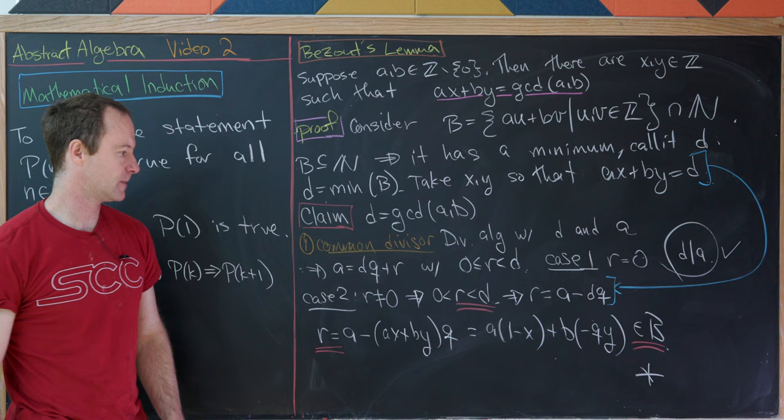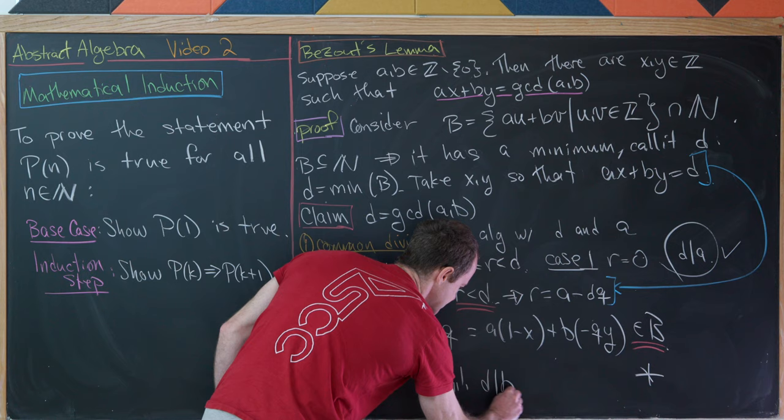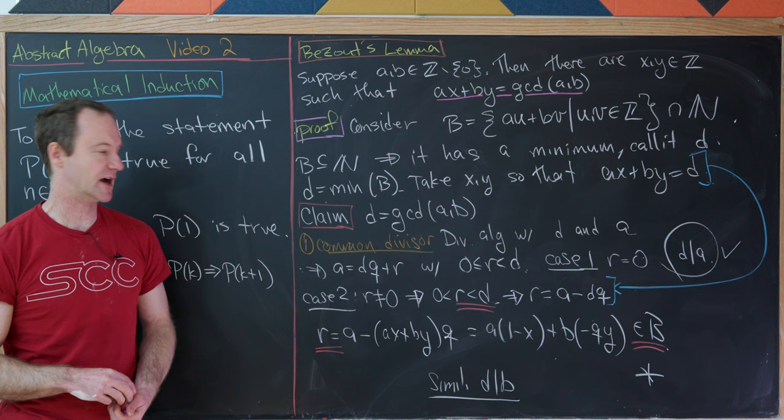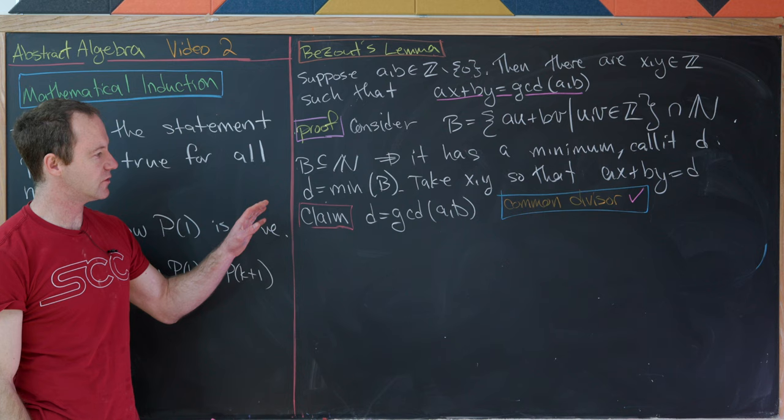By the exact same argument with A replaced by B, D also divides B. So D is indeed a common divisor of A and B. Now let's show it's the greatest common divisor.